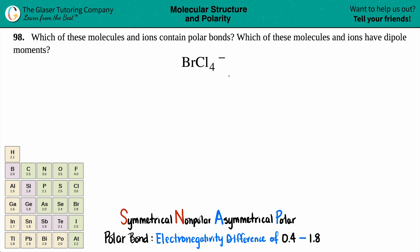Number 98: Which of these molecules and ions contain polar bonds, and which of these molecules and ions have a dipole moment? We have BrCl4 minus. I do see we have a charge up here, which means we're in ion territory. An ion just means it's a charged species, whether positive or negative.